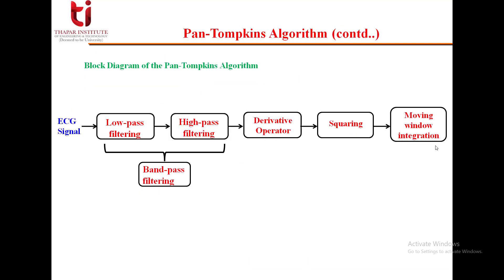This is the general block diagram of the Pan-Tompkins algorithm. In this, the first stage is filtering — we use band-pass filtering, implemented by cascading a low-pass filter and a high-pass filter. Then we have the derivative operator, followed by squaring, and finally moving window integration. We will discuss the function of each part in detail.